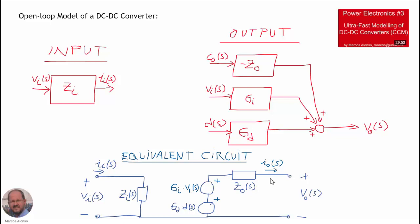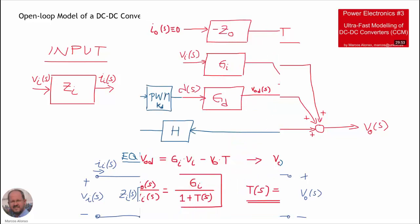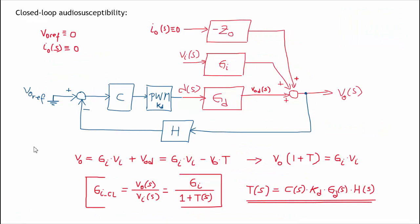With this we have everything to analyze the converter operating in closed loop. Here we have our converter operating in closed loop. We are measuring the output voltage using a sensor H, we compare this signal with the reference, and then send the error signal to the compensator, then the PWM circuitry, and finally to the control-to-output transfer function. Now we are interested in getting the audio susceptibility transfer function in closed loop, so we make null the perturbations on the reference voltage and also on the output current, applying zero voltage and zero input current.